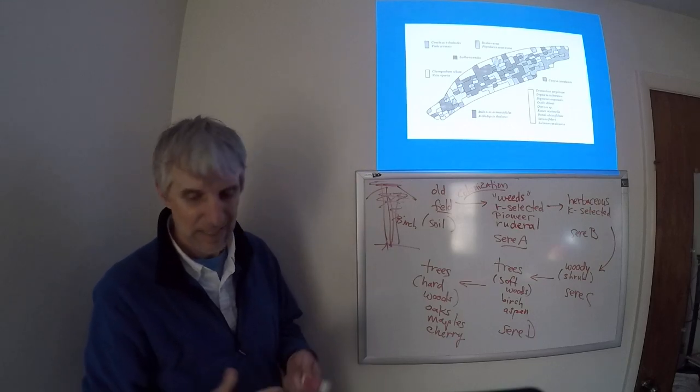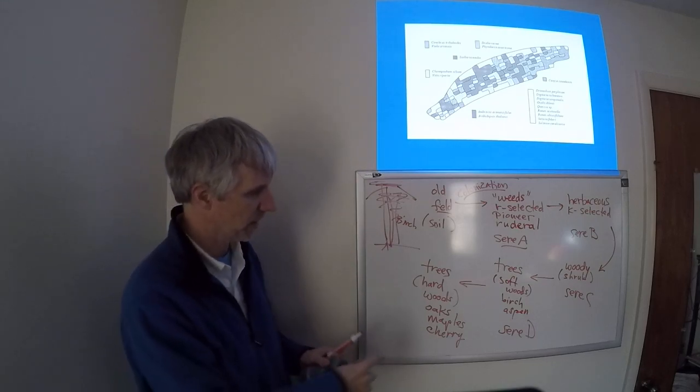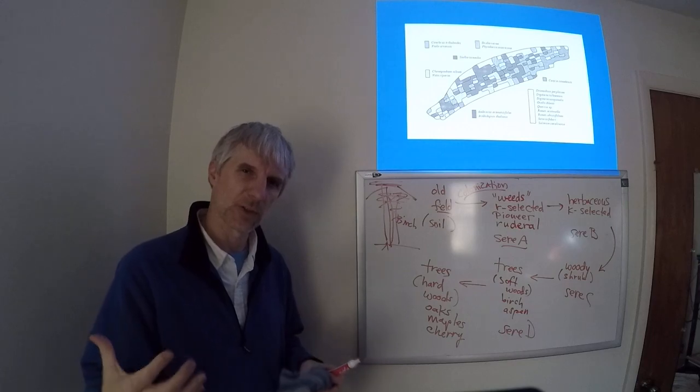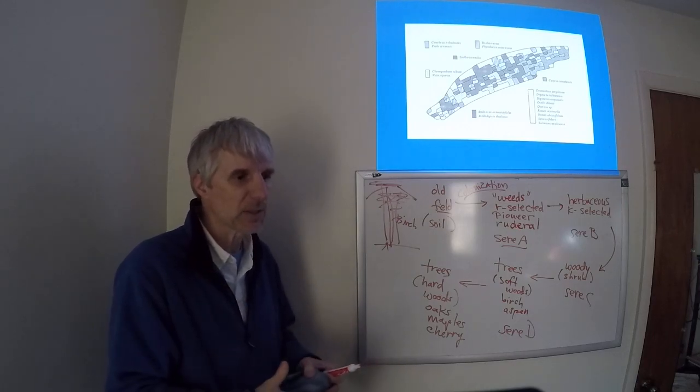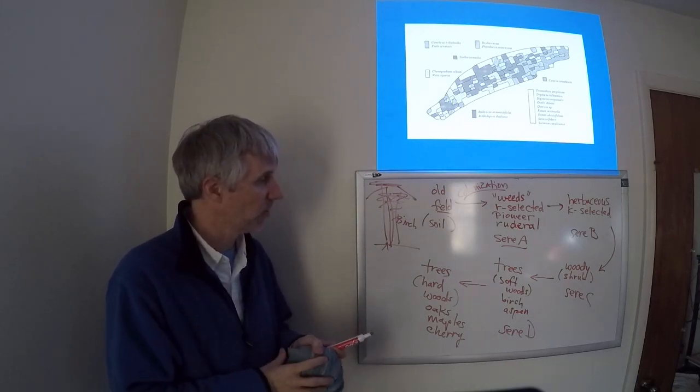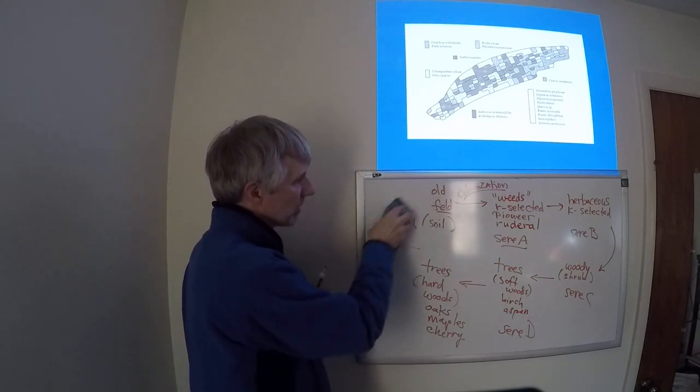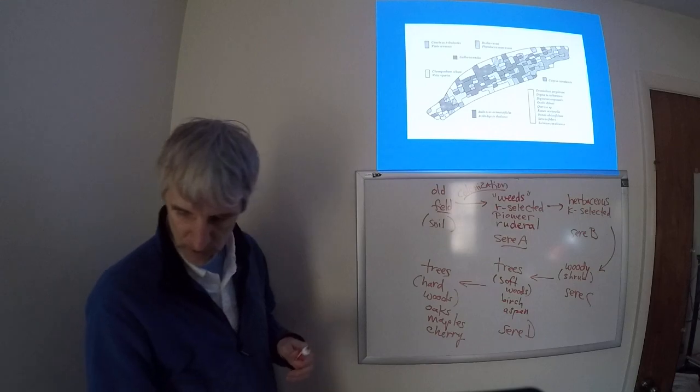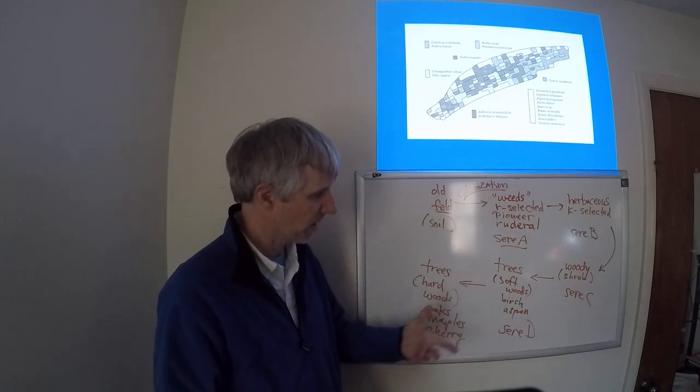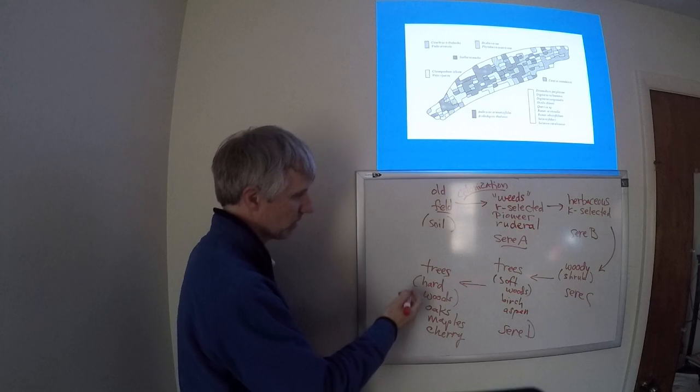But the birch is needed because the seedlings of these hardwoods can't hack full sun. They need some kind of shading in order for them to develop properly. So these birches are necessary, along with aspens and these other softwoods, to get development of these hardwoods.